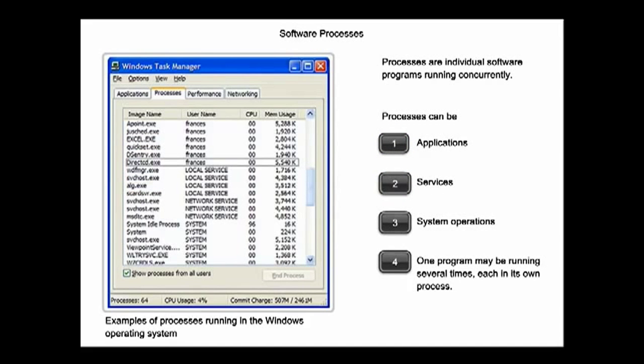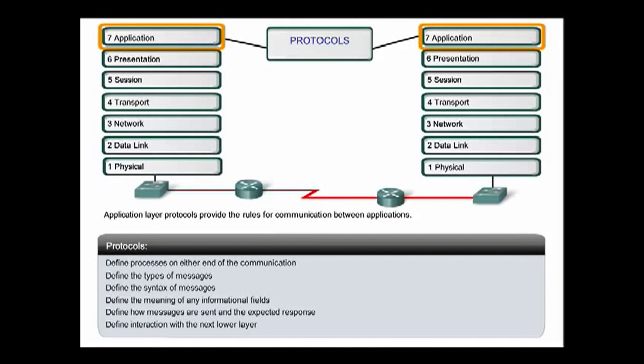The two forms of software programs or processes that provide access to the network within the application layer include applications and services. When we open a web browser or an instant message window, an application is started and the program is put into the device's memory where it is executed and referred to as a process. Application layer protocols establish consistent rules for exchanging data between applications and services loaded on the participating devices. Within the application layer, protocols specify what messages are exchanged between the source and destination hosts, the syntax of control commands, the type and format of the data being transmitted, and the appropriate methods for error notification and recovery. The application layer protocols implemented on the source and destination host must match in order for communication to be successful.